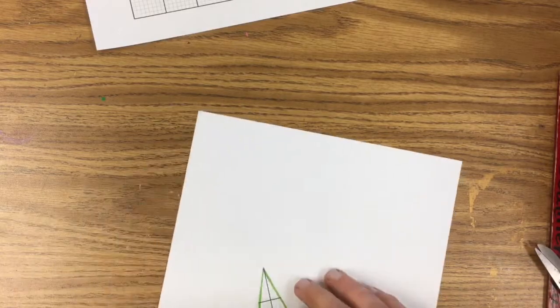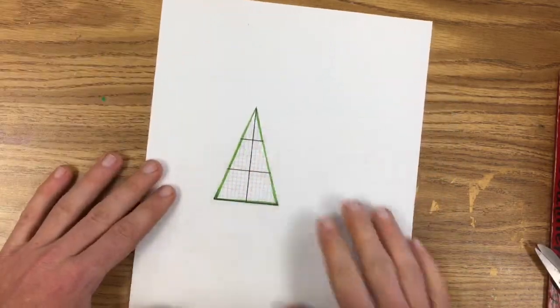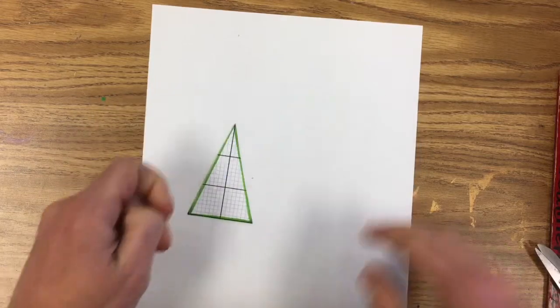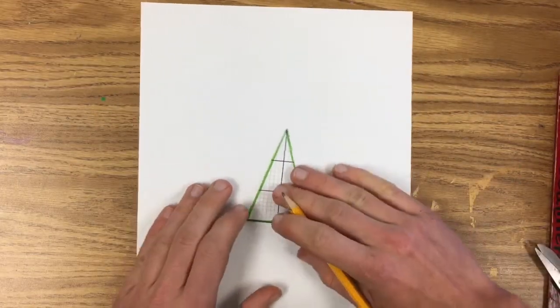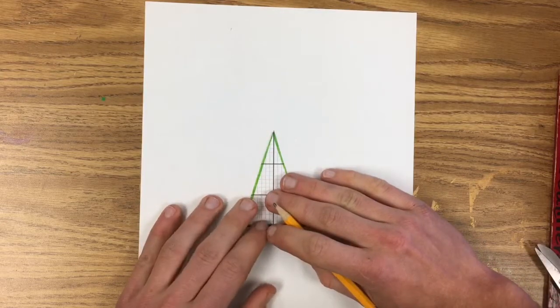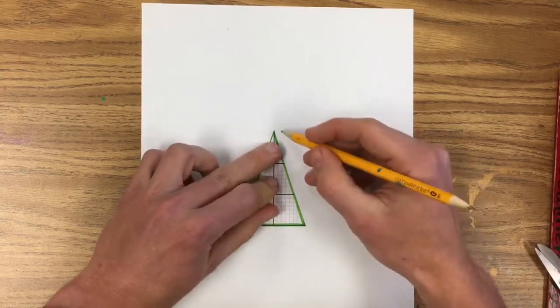Now on another sheet of paper, this part's a little bit tricky and it may take some moving this pentagon around to get right. But if you take your pentagon— I'm sorry, take your triangle and place it somewhere in the middle of your paper.